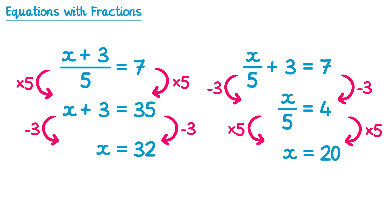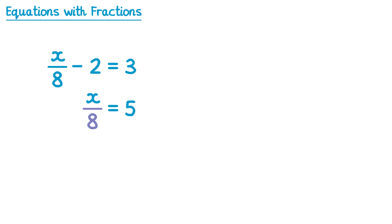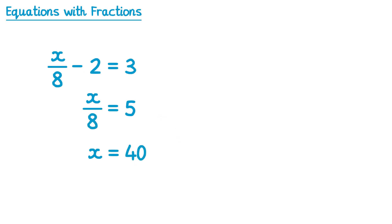Let's try a couple more, paying attention to the order of operations. For this equation, the subtract 2 is outside the fraction, so we add 2 to both sides first. This cancels the subtract 2 on the left, leaving x over 8, and on the right we have 3 plus 2 which is 5. Then we multiply by 8 on both sides — this cancels the 8 on the left, leaving x, and on the right 5 multiplied by 8 is 40. So x equals 40.